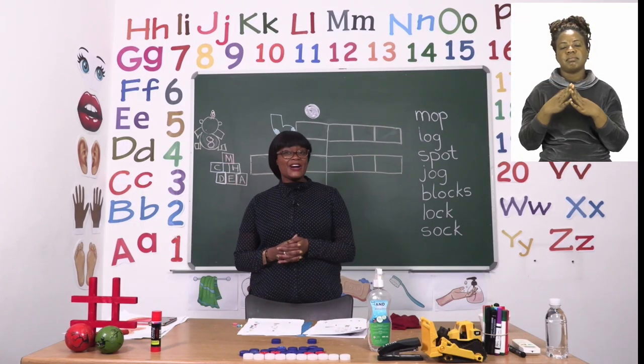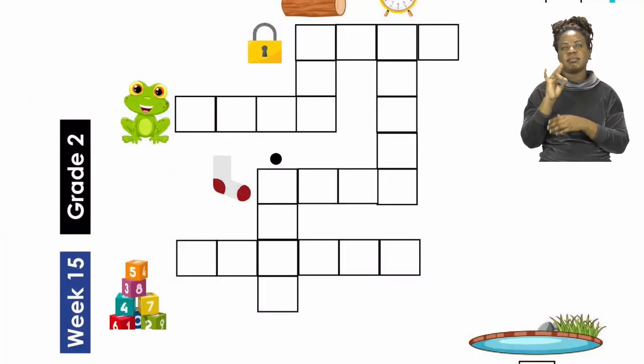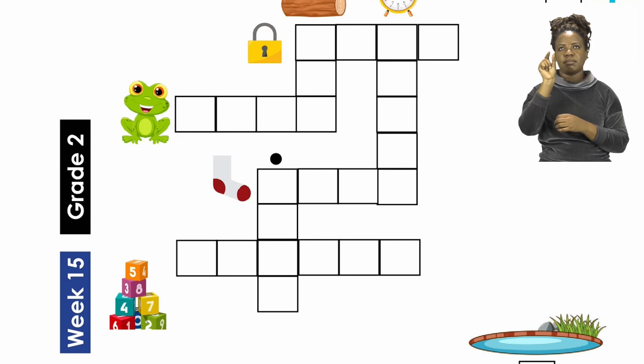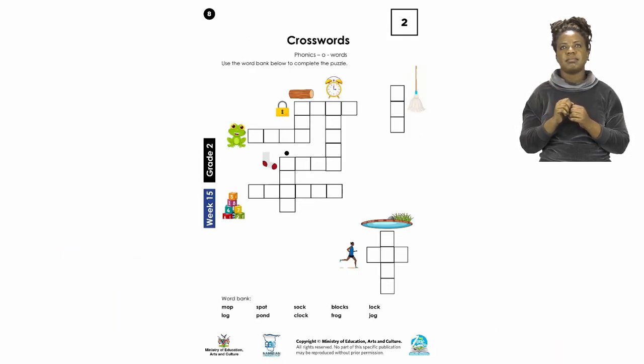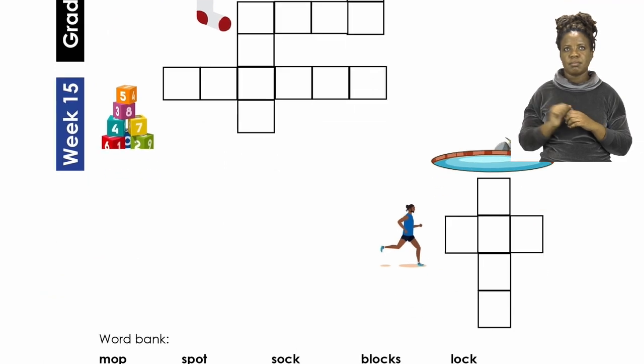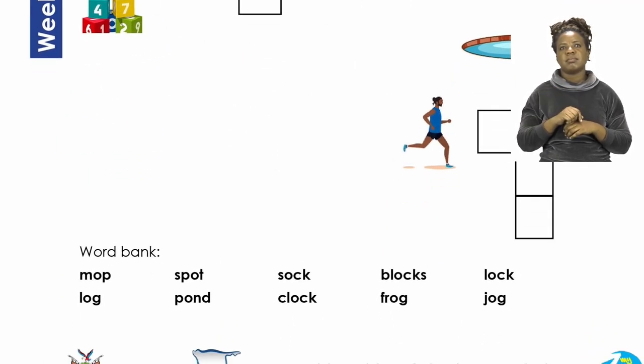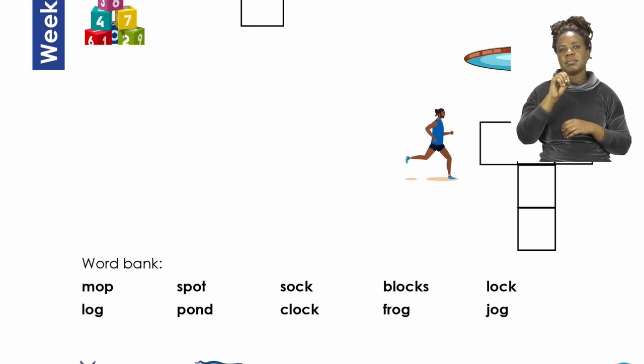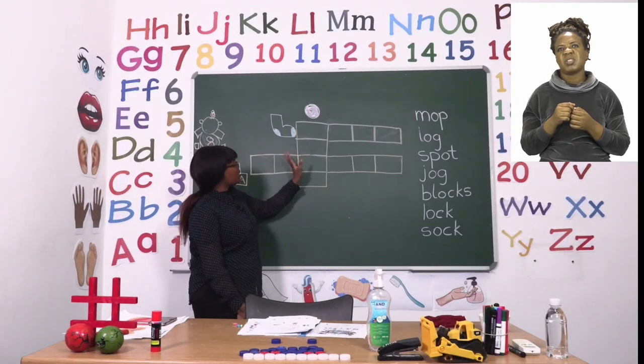To end our lesson boys and girls, we are now going to go to page 8. On page 8 we are going to be doing a crossword puzzle. And with our crossword puzzle is the sound O. So what we need to do is to use the word bank below to complete the puzzle. Let's start by reading the words below. So we have the words mop, spot, sock, blocks, lock, log, pond, clock, frog, jog. Well done everyone. Now we're going to try and do a few together. So let's take a look at the board. On the board, I have decided to just put a few of them that we're going to do.